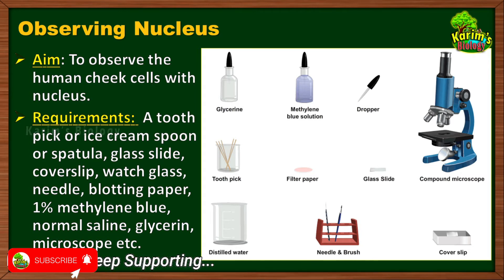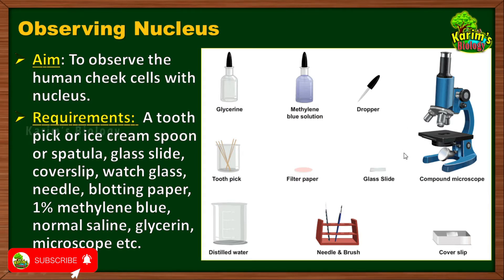Normal saline is required, distilled water is required, and glycerin is required — because glycerin, when placed on the cells, prevents the drying of the specimen. And last but not least, we require a compound microscope to magnify and observe the cells very clearly.